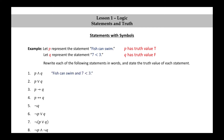P and Q can be written 'fish can swim and seven is less than three.' This is true and false, which according to our rules is false. P or Q can be written 'fish can swim or seven is less than three.' This is true or false, which is true. P implies Q can be written 'if fish can swim, then seven is less than three.' True implies false is false.